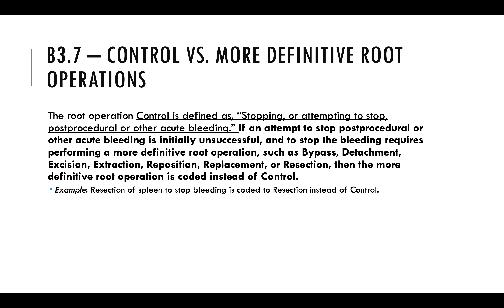Control: When we try to control bleeding versus more definitive root operations — if an attempt to stop post-procedural or acute bleeding is initially unsuccessful and stopping the bleeding requires performing a more definitive root operation such as bypass, detachment, excision, extraction, reposition, replacement, or resection, then the more definitive root operation is coded instead of control. Control is your first attempt to stop the bleeding; if it's not sufficient and they have to perform a whole new procedure, the whole new procedure is coded instead of control.